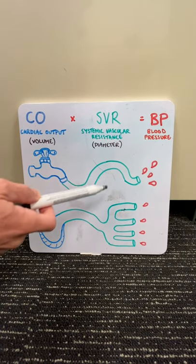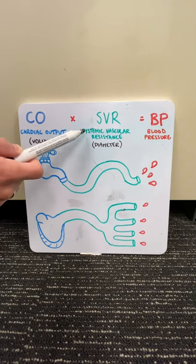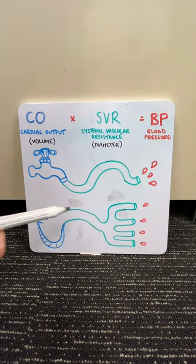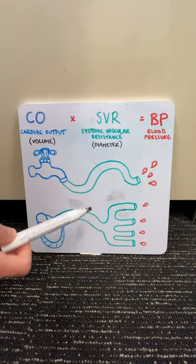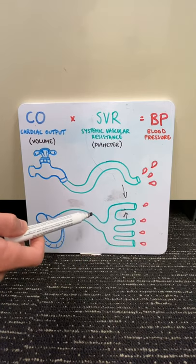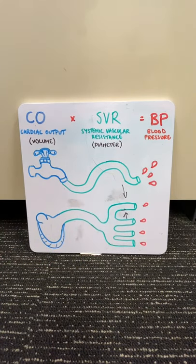When we look at the hose, you can change the diameter of that hose, and we call that systemic vascular resistance. If you put your thumb on the end and narrow the diameter, fluid will come out at a higher pressure. Same with blood vessels—when you narrow blood vessels you increase the systemic vascular resistance and the blood comes out at a higher pressure.